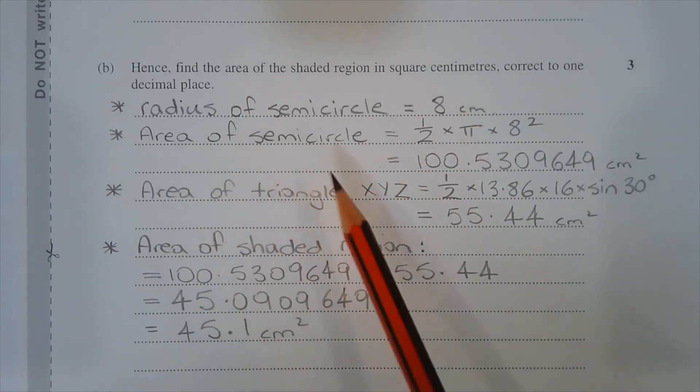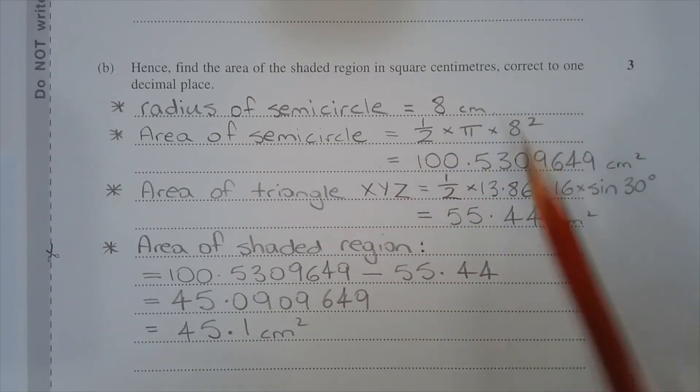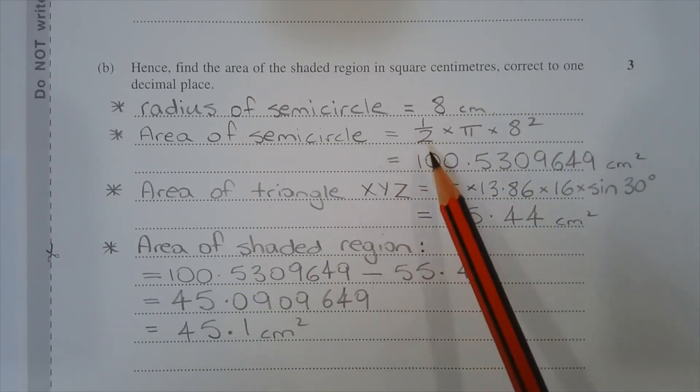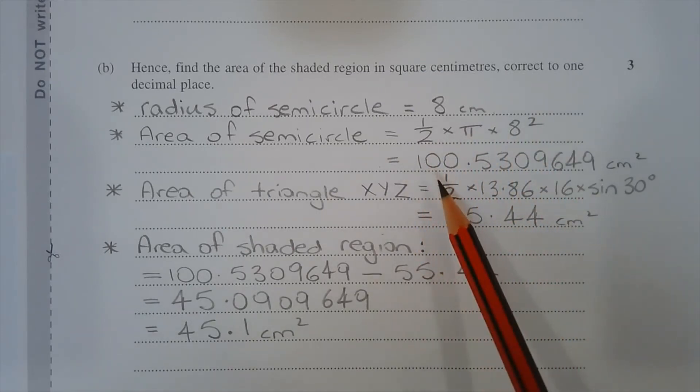Now the area of the semicircle is given by the formula half multiplied by pi r squared, where r is 8 centimetres. So that's equal to half multiplied by pi multiplied by 8 squared and that equals 100.5309649 square centimetres.